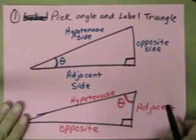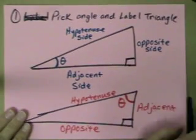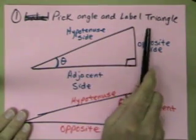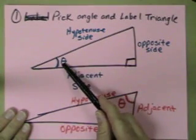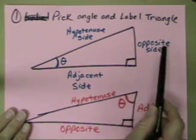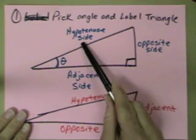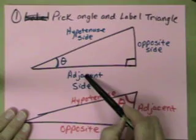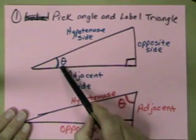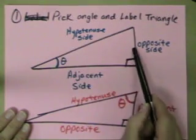a couple little reviews real quick. First one, remember, the first step you're going to do is you're going to pick your angle and label your sides. I've given you some examples. Here's the angle that they picked in the first one. Opposite side, adjacent side, and hypotenuse. Remember, the hypotenuse and the adjacent touch the angle side, and the opposite is always across from it.